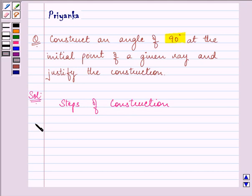The first and foremost step is to draw a ray AB like this. A is the initial point of this ray.